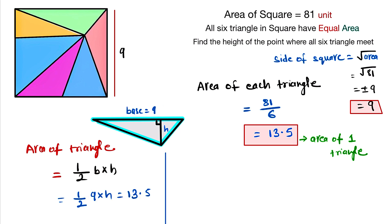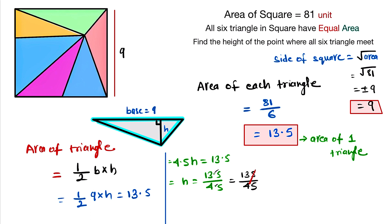Now we put in the value 13.5. Simplifying, we get 4.5h = 13.5, so h = 13.5 ÷ 4.5, which equals 3. Therefore, the height h is equal to 3.